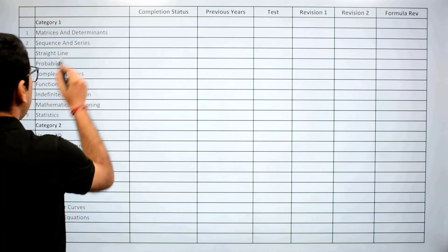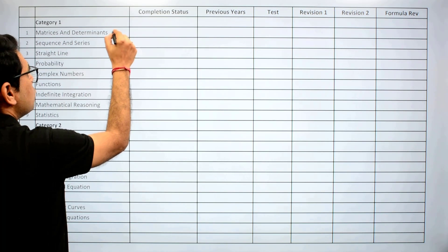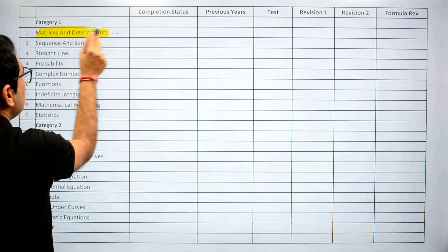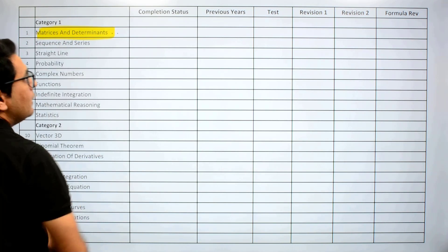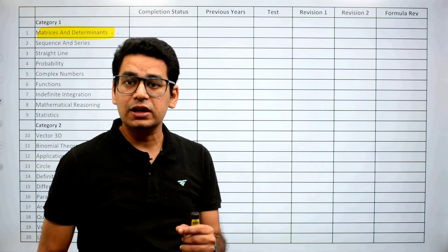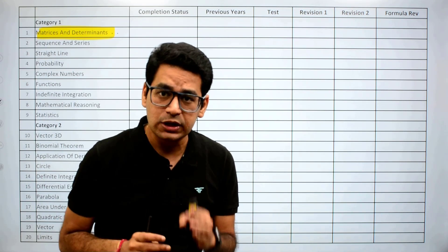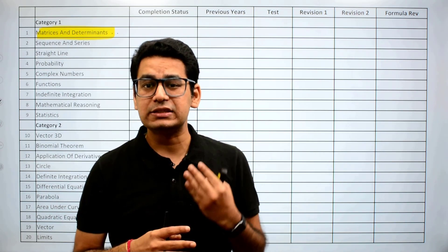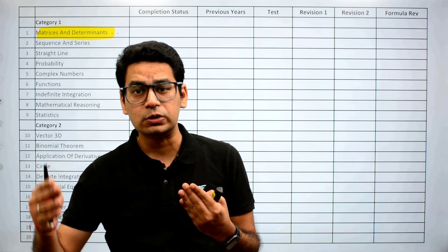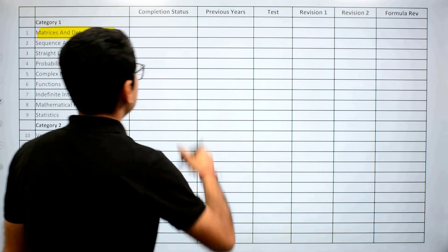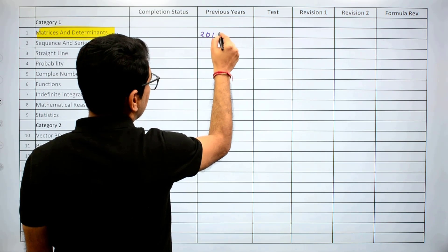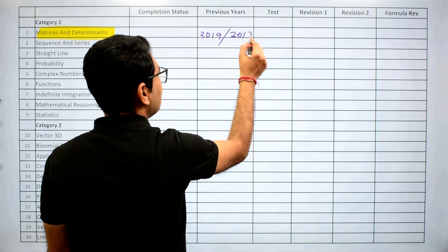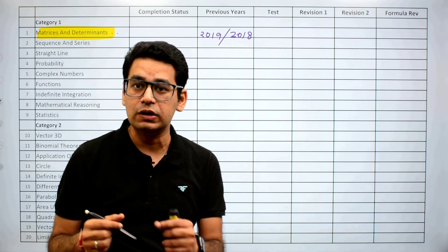For example, if you are studying matrices and determinants, highlight matrices and determinants. A lot of students are asking: how many previous years do we have to do, and till which year? Guys, it is important to finish from 2013 to 2019. I know there are a lot, so what you can do is note the year — write 2019 done, then add 2018 done — because previous years are a very very important tool of revision.